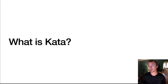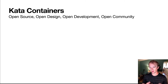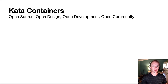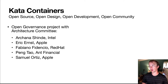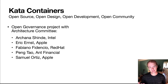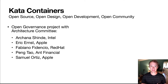Starting off, what is Kata? We're an open source project and part of the Open Infrastructure Foundation. Early on, the project had a big focus on making sure it wasn't just open source, but also did open design, open development, and open community instead of just throwing things over the wall. We have an architecture committee and open governance — twice a year, we vote for different seats, and anybody who has committed anything into the project is able to vote. We have a good diversity of great engineers from different companies: Archana from Intel, Fabiano from Red Hat, Peng Tao from Ant Financial, as well as Samuel Ortiz from Apple.